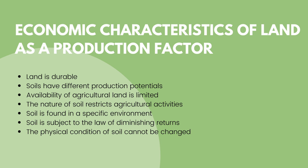Only 25% of earth is covered by land, and only half of this land can be ploughed. Only a small percentage of soil can be used for agricultural production, so the availability of agricultural land is limited. The nature of soil restricts agricultural activities — crops often grow in certain types of soil. Soil is found in a specific environment.